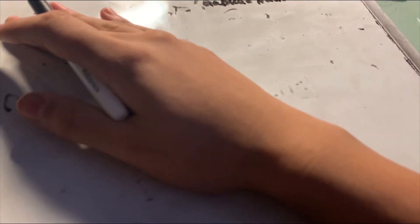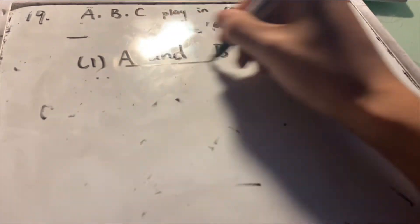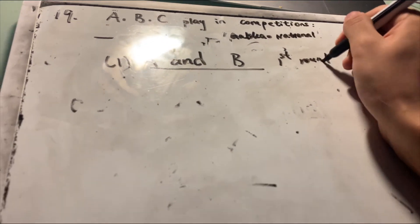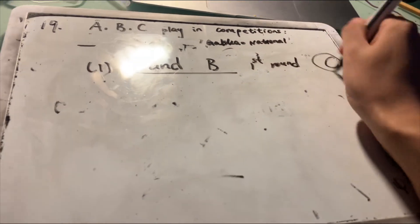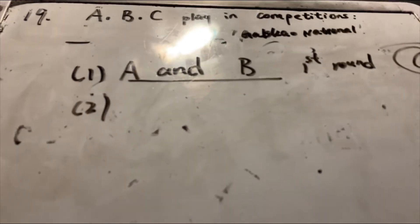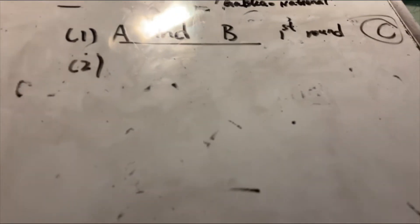The game is based on two assumptions. First, according to the rule, A and B are going to participate in the first round and C is going to draw a bye. Second, we assume that the chance for each person to win is 1 over 2.